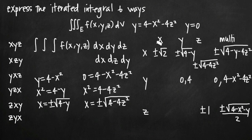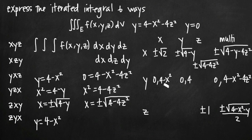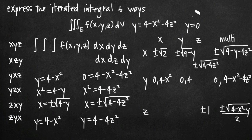For y in terms of x, I plug in 0 for z and get y = 4 - x². That gives only one limit of integration, so I also use y = 0, giving limits 0 and 4 - x². For y in terms of z, I plug in 0 for x and get y = 4 - 4z². Again I only have one limit, so I use y = 0 as well. My limits there are 0 and 4 - 4z².